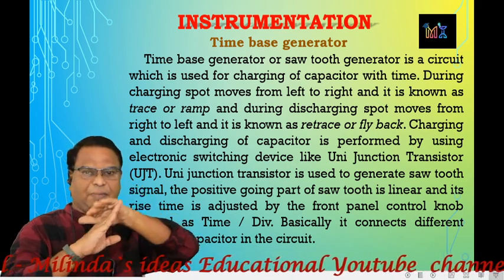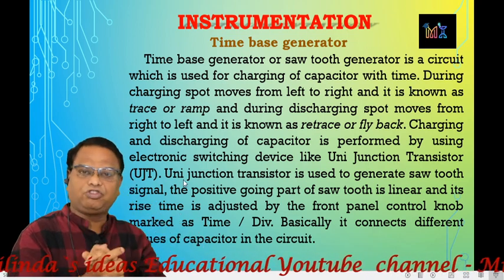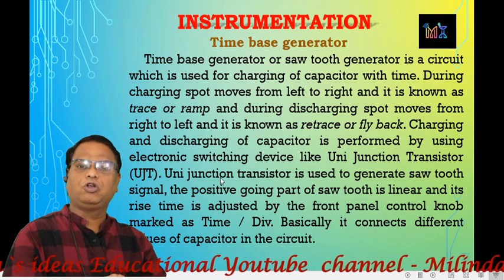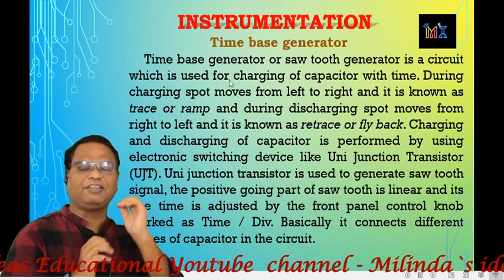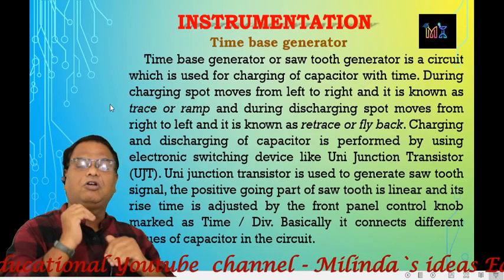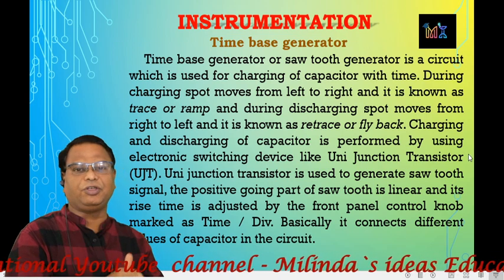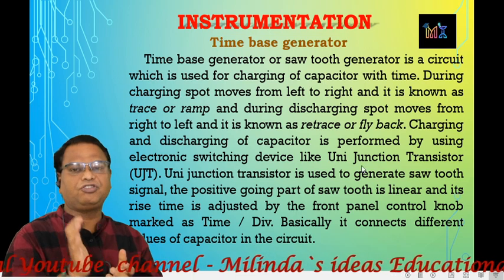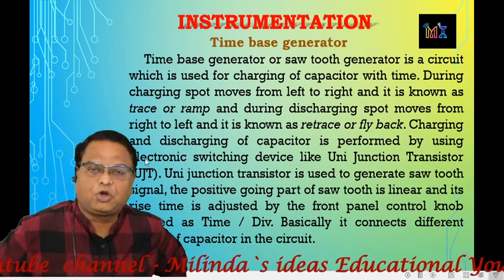The capacitor is charged to a peak and then gets discharged. To generate the sawtooth waveform — to generate the time-based output — we have to use a capacitor. The capacitor charges, and for that purpose we have to use a true electronic switch. That true electronic switch is the unijunction transistor, UJT. UJTs are used as the true electronic switch.